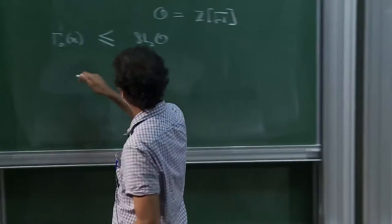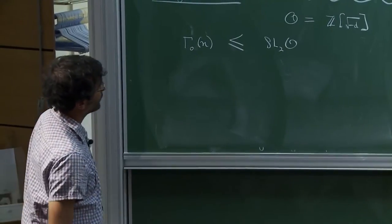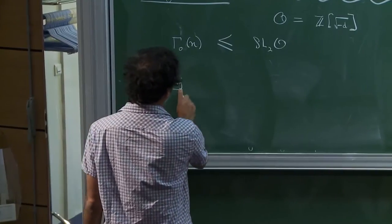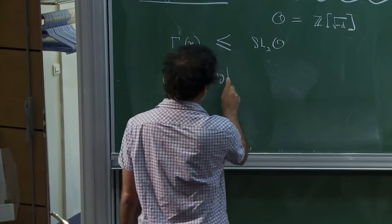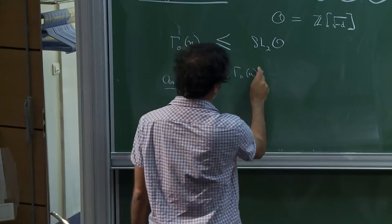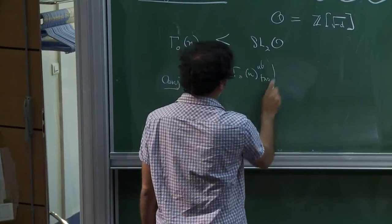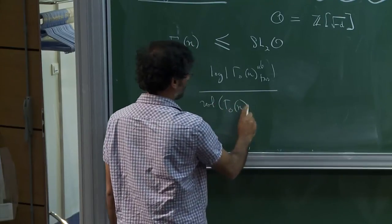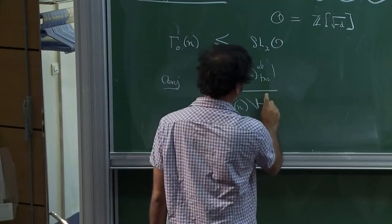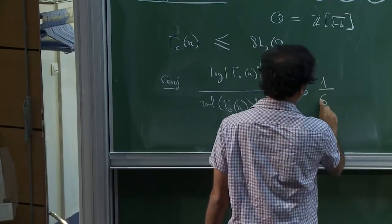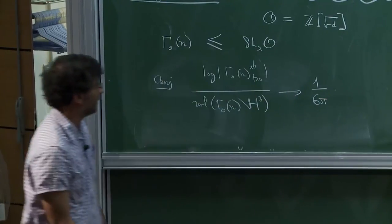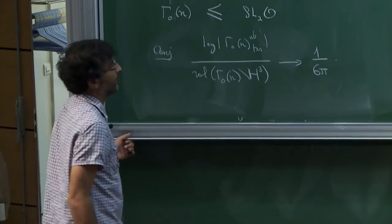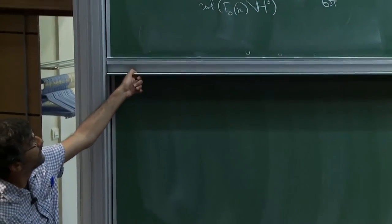Back to our main topic. The conjecture we've been discussing is that the size of the abelianization of this group, with the correct scaling by the volume, goes to one over 6π.